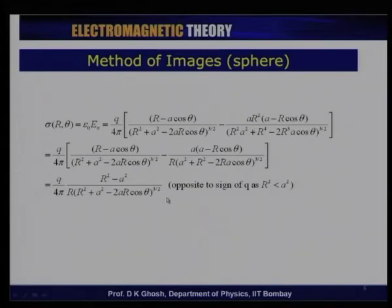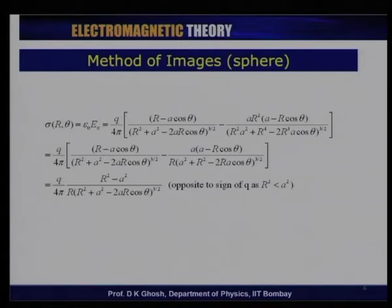Notice immediately that since the radius R of the sphere is less than the object distance a — because the charge is outside the sphere — R² − a² is negative. So the charge density, as expected, is negative.